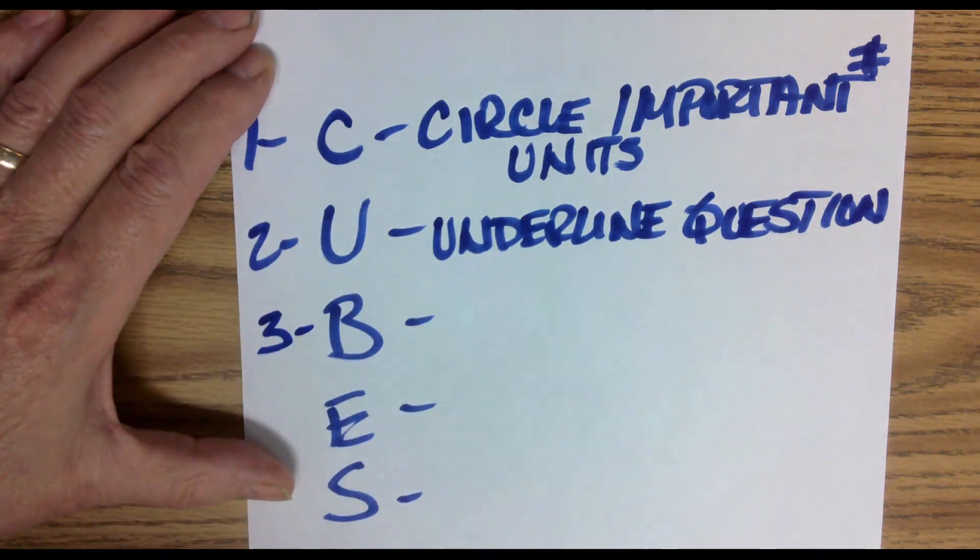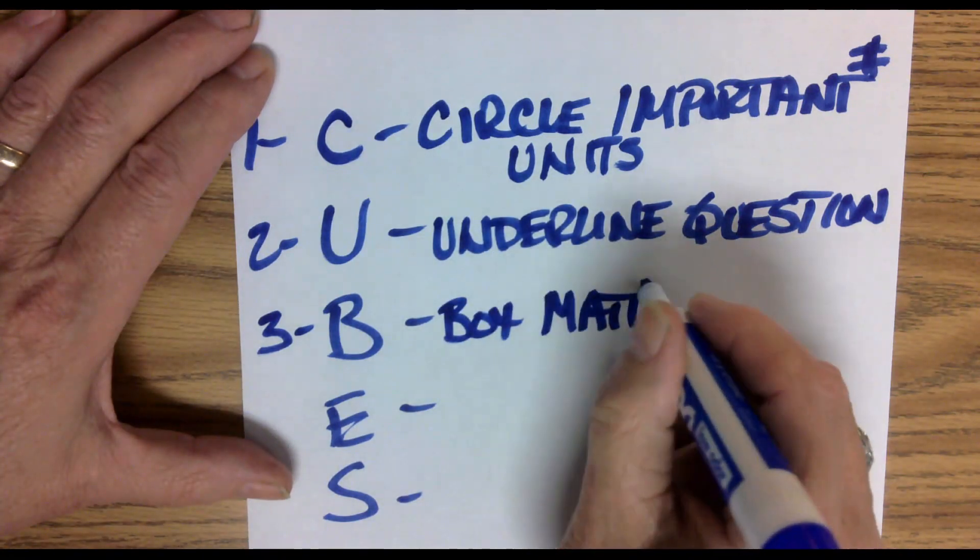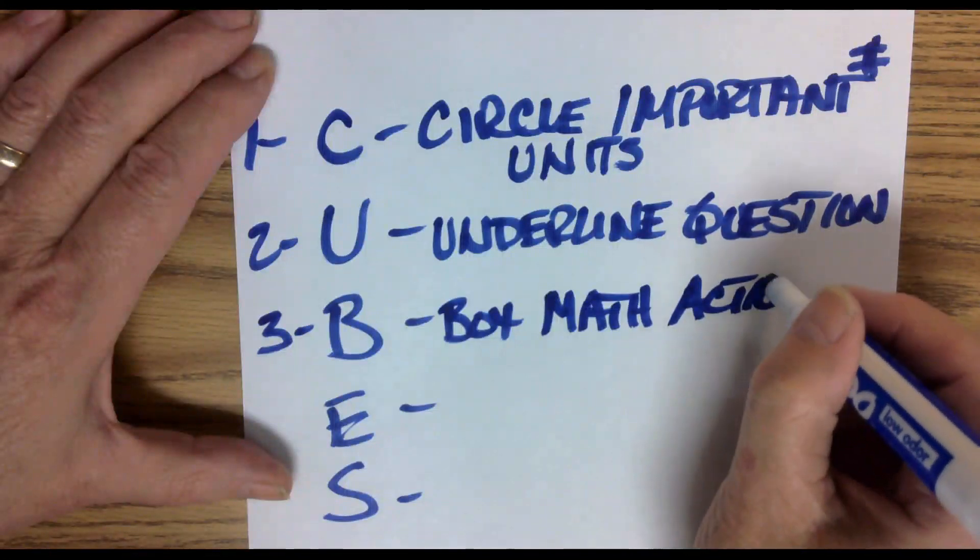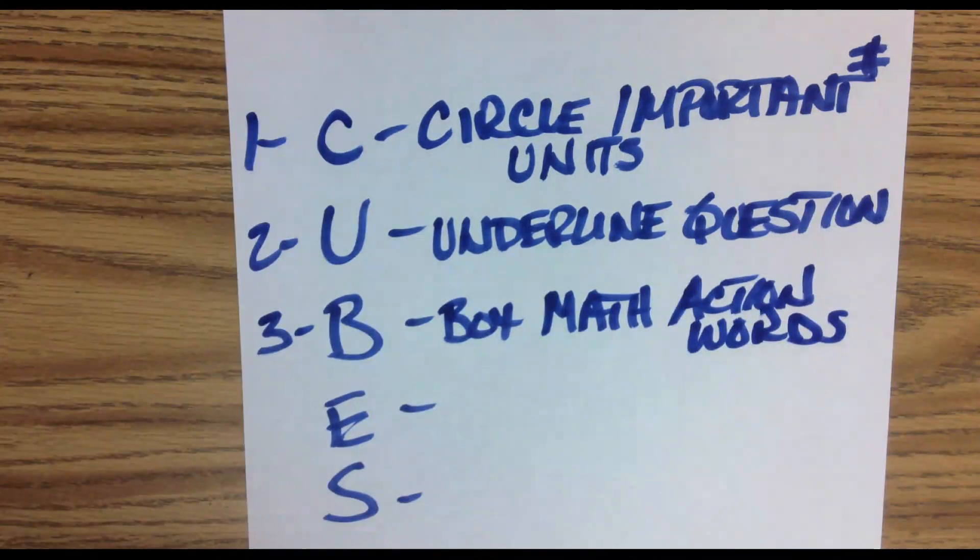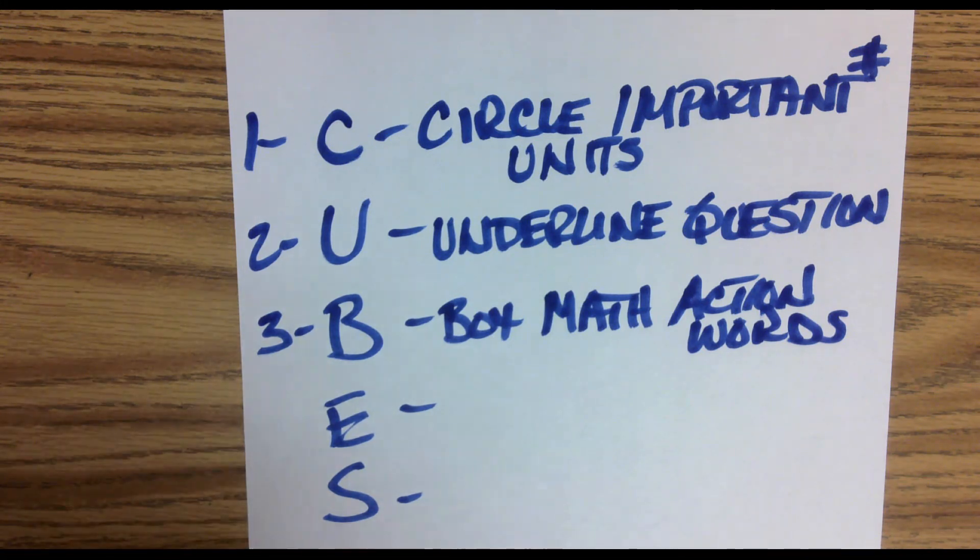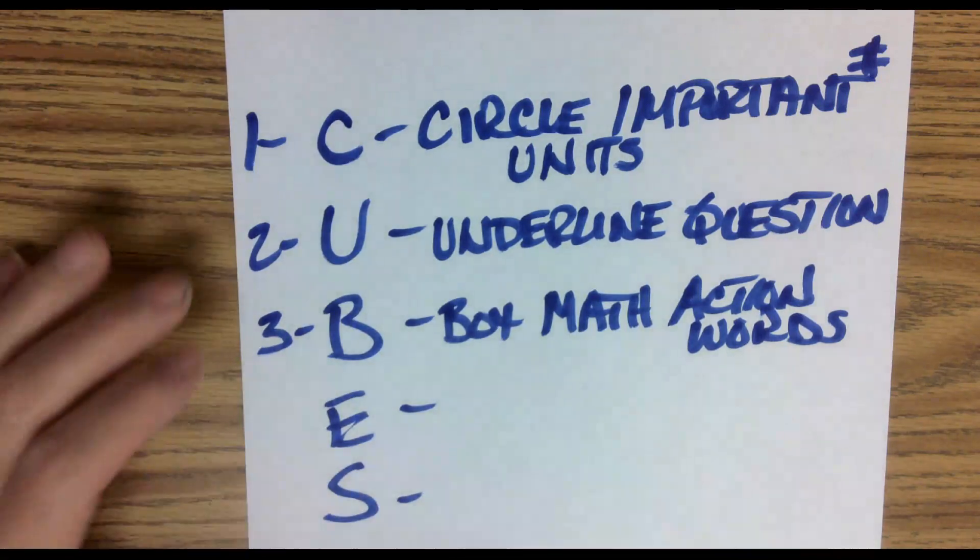Three is B. B stands for Box Math Action Words. What's an example of a math action word? Well, a math action word for example could be like if we saw the word less than. Well that's going to mean subtraction or take away from, or you might see the word times or you might see anything that has to do with addition, subtraction, multiplication, or division. So how they answer the question is going to give you clues as to what operation that you're going to use to solve the question.